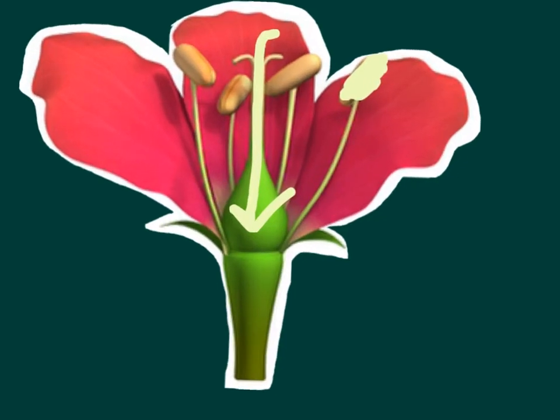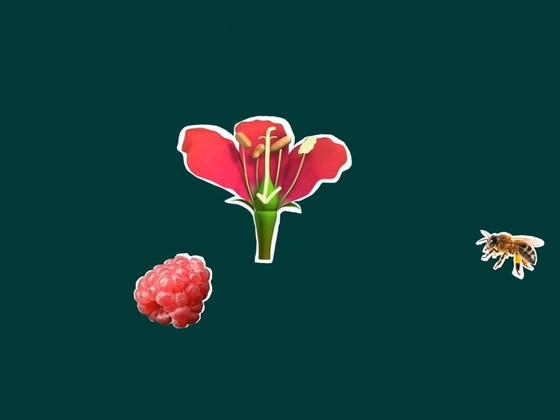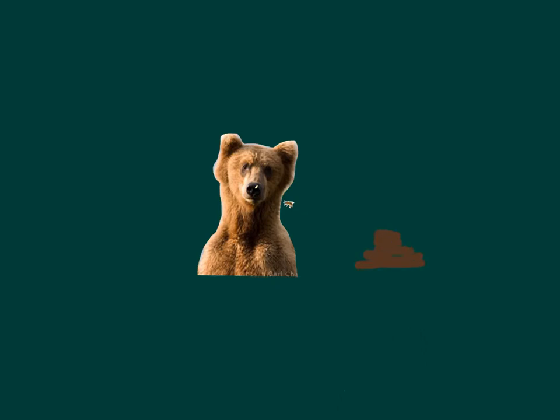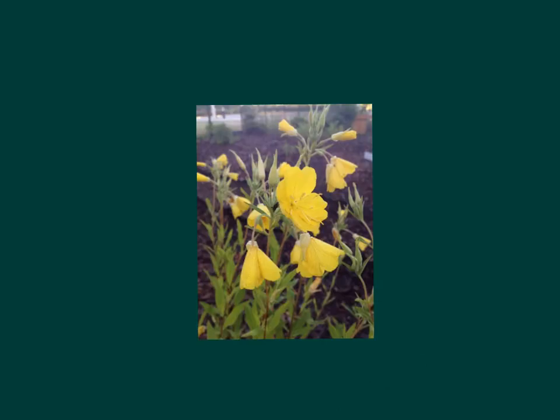The ovules will become seeds, and either the flower will decompose and the seeds will go back into the ground, or it might become a fruit. If it becomes a fruit, it might even be consumed by a consumer, like a bear. If that happens, it will eventually be digested and then end up in feces, which also goes back into the ground, and the whole cycle starts over again. And that is how a plant reproduces.